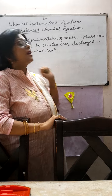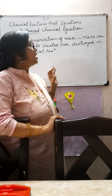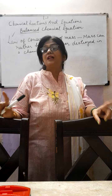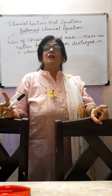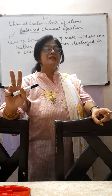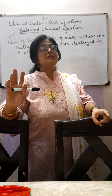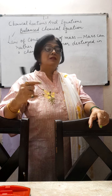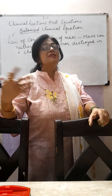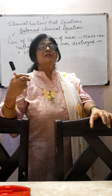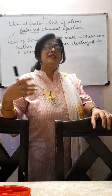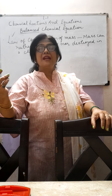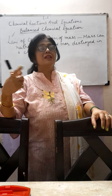So we need to balance the chemical equation. Now how to balance it — this is a very important topic and we will understand it carefully. I will take one or two examples. First, I will show you an example we did earlier: when we put zinc granules and added dilute sulfuric acid, hydrogen gas was formed. Let us take that same equation and see how to balance it.